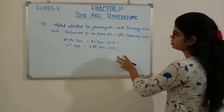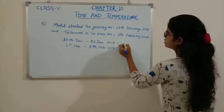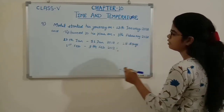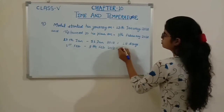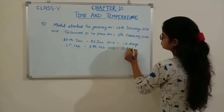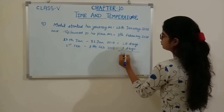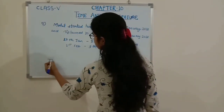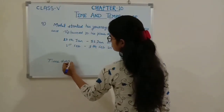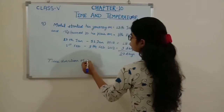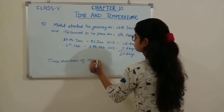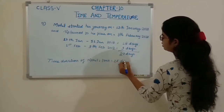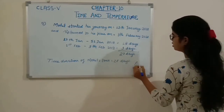From 13th of January to 31st of January 2018, there are 18 days. And from 1st February to 9th February, there are 9 days. So the total number of days is 27 days. The time duration of Mohit's tour is 27 days. This is your answer.